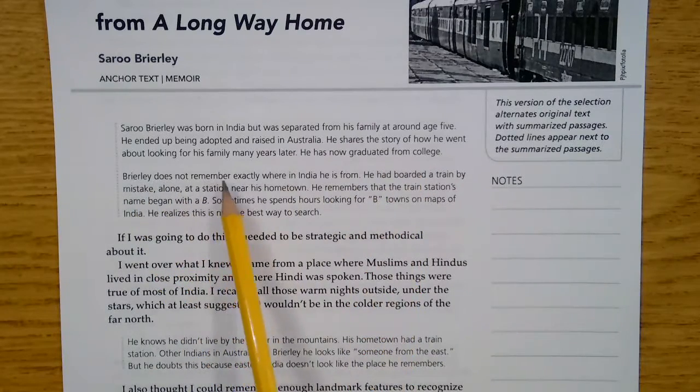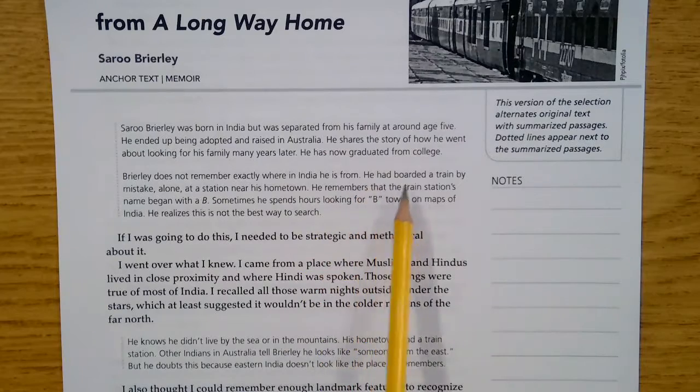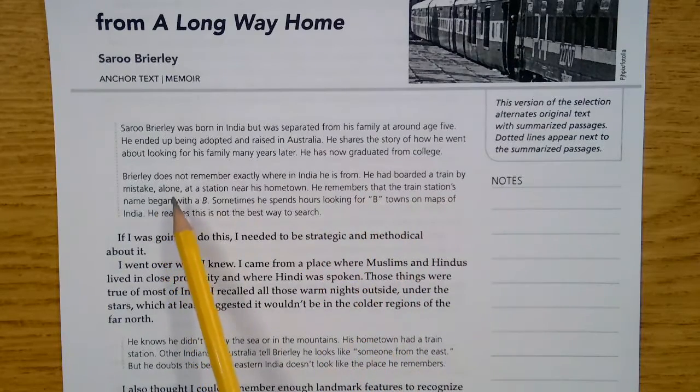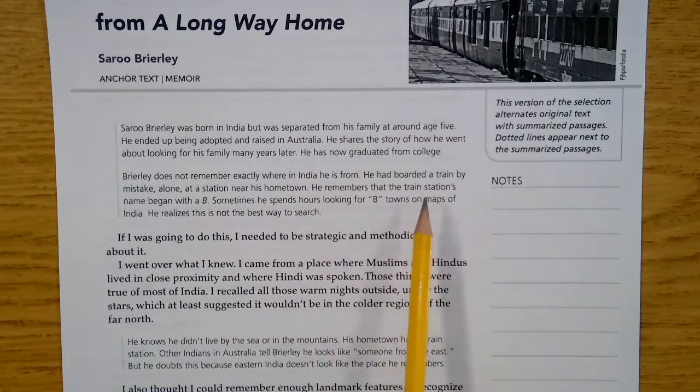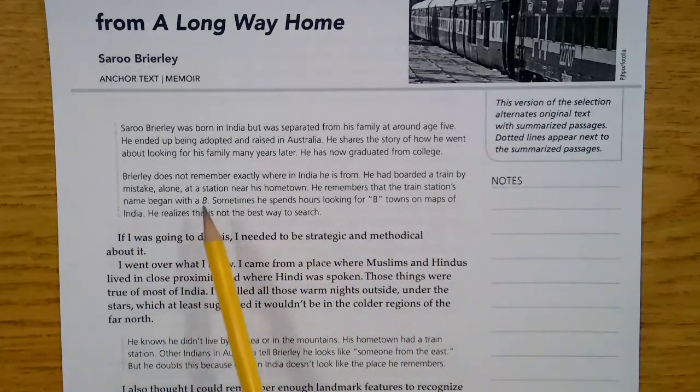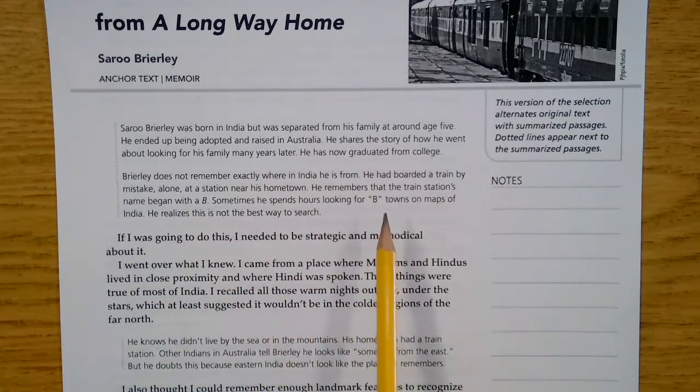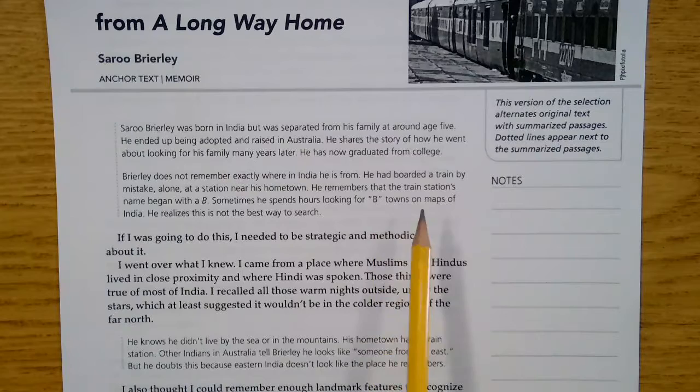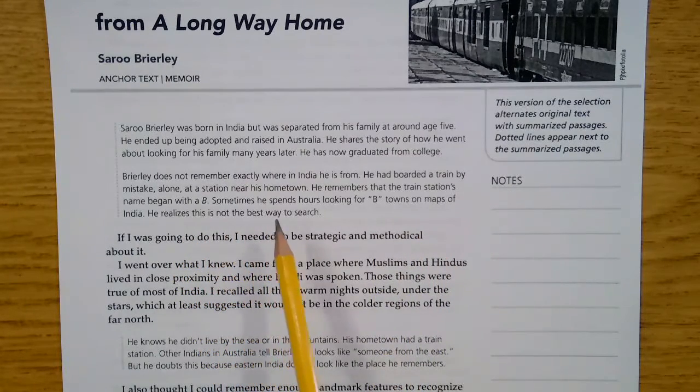Brierley does not remember exactly where in India he is from. He had boarded a train by mistake alone at a station near his hometown. He remembers that the train station's name began with a B. Sometimes he spends hours looking for B towns on maps of India. He realizes this is not the best way to search.